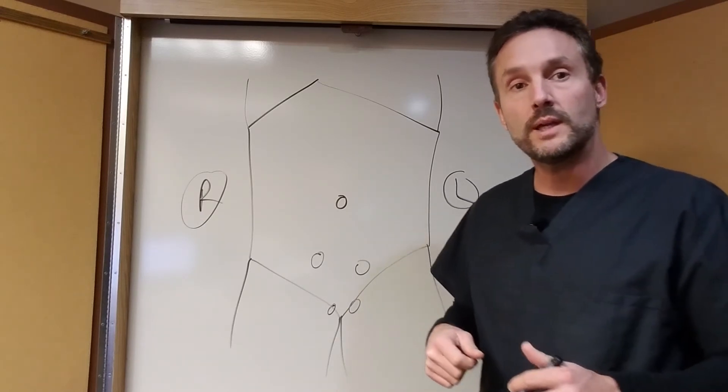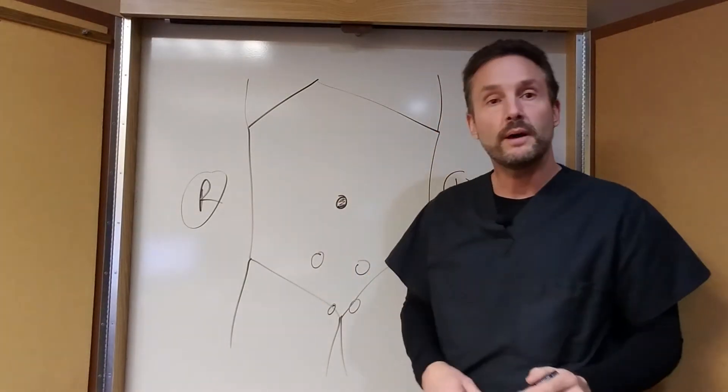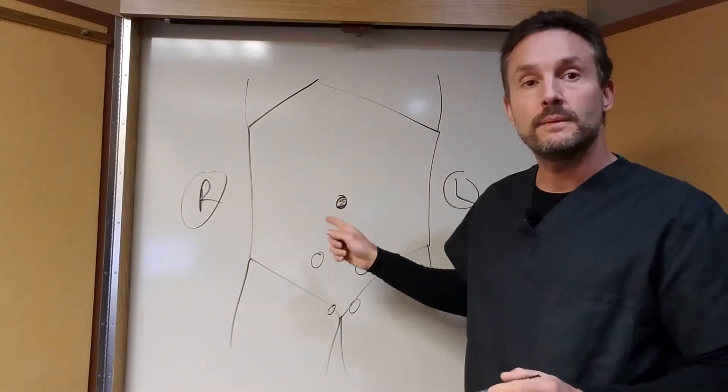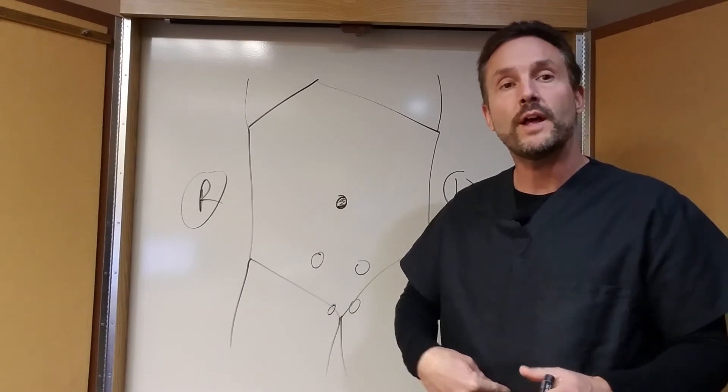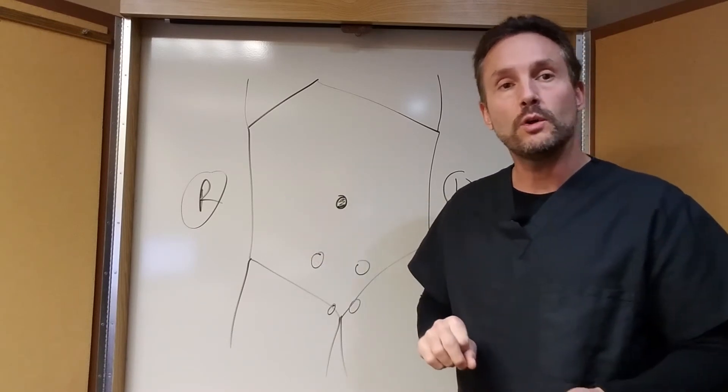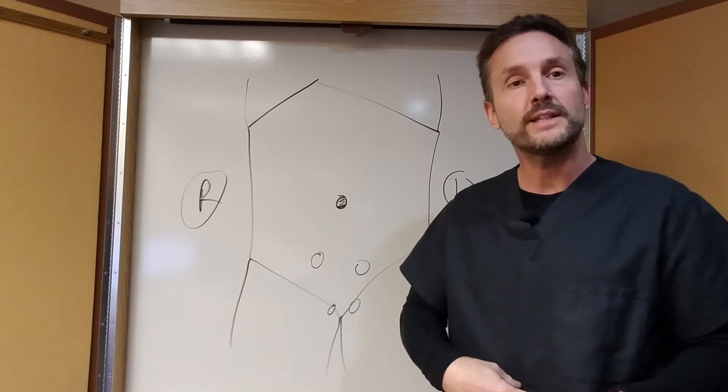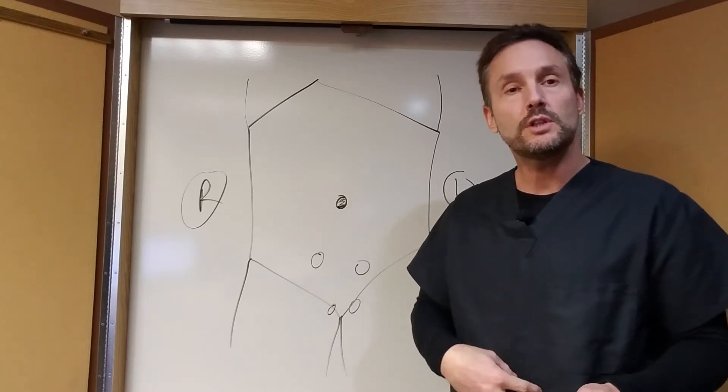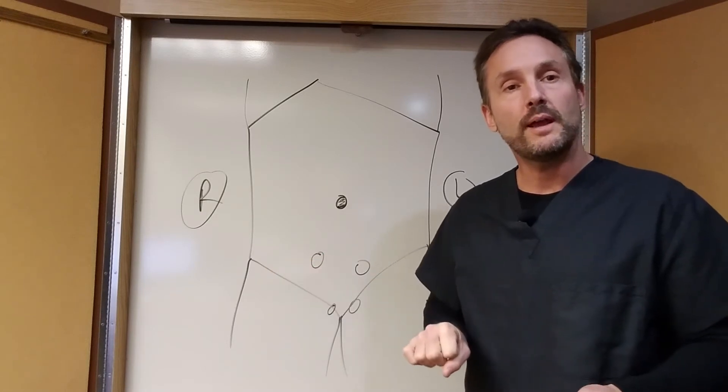The next type of hernia that we can get is called an umbilical hernia or belly button hernia, and your belly button had your umbilical cord going through it before you were born. So that's another hole that was put in your basket. Some babies are born and they have a little bulge in their belly button. That's an umbilical hernia. And usually by a year of age, that thing closes up and it doesn't become a hernia anymore.